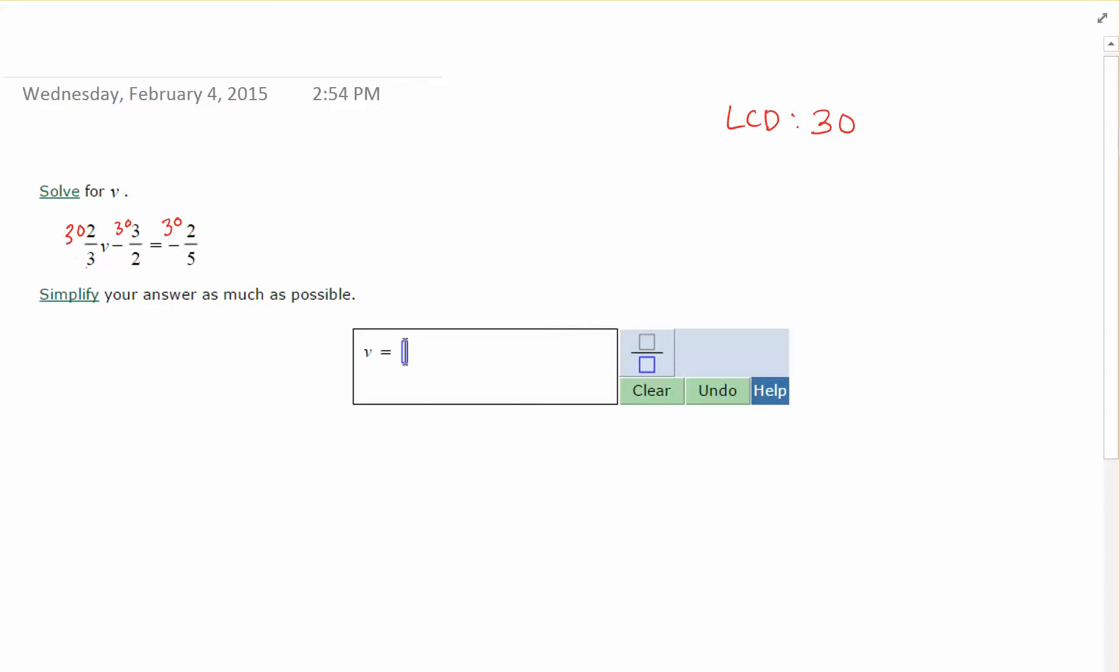Next, clear the fractions. That means take your denominators, divide it into the LCD. So 3 goes into 30 fifteen times. Take that number and multiply by the numerator. So 15 times 2 is 30. So I have 30V.